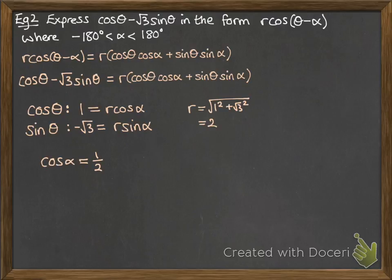And then we need to work out alpha. So starting with cos alpha equals a half, we can then get alpha equals 60. And then look at our graph for the other roots. Between minus 180 and 180, we've got 60 and minus 60.